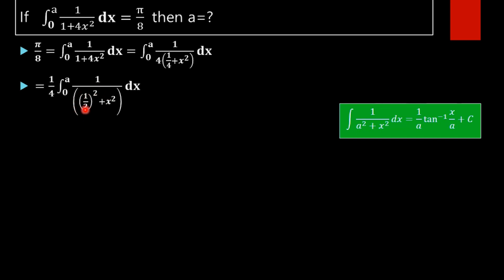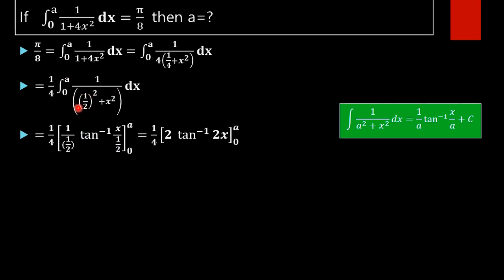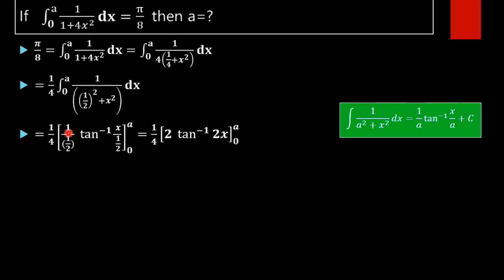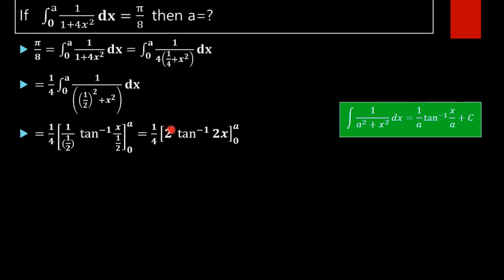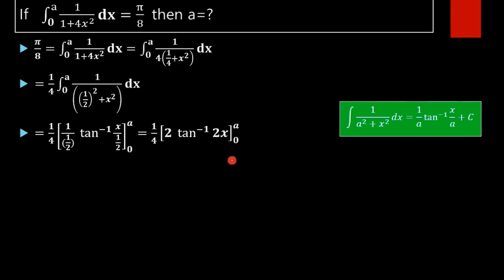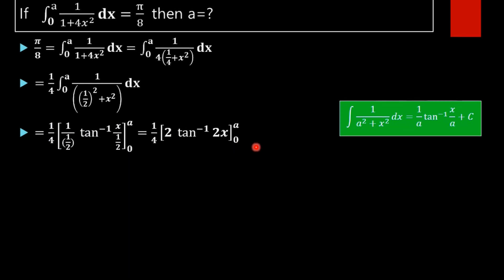Here a = 1/2 and we have x². Applying the formula, we get (1/a) tan⁻¹(x/a), where 1/a = 1/(1/2) = 2, and x/a = x/(1/2) = 2x. So the result is (1/4) × 2 tan⁻¹(2x) evaluated from 0 to a.